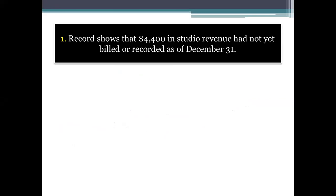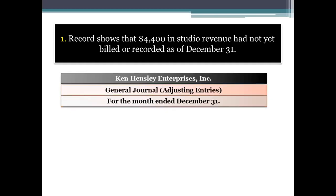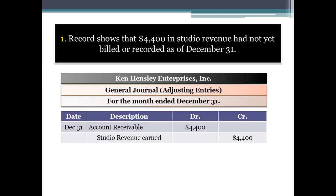Part one: the record shows that $4,400 in studio revenue has not yet been billed or recorded as of December 31st. We make a format with the company name first, then general journal, then for the month ended December 31st. We have to record studio revenue of $4,400 that was not recorded on December 31st, meaning this was revenue for the month of December which was unrecorded.